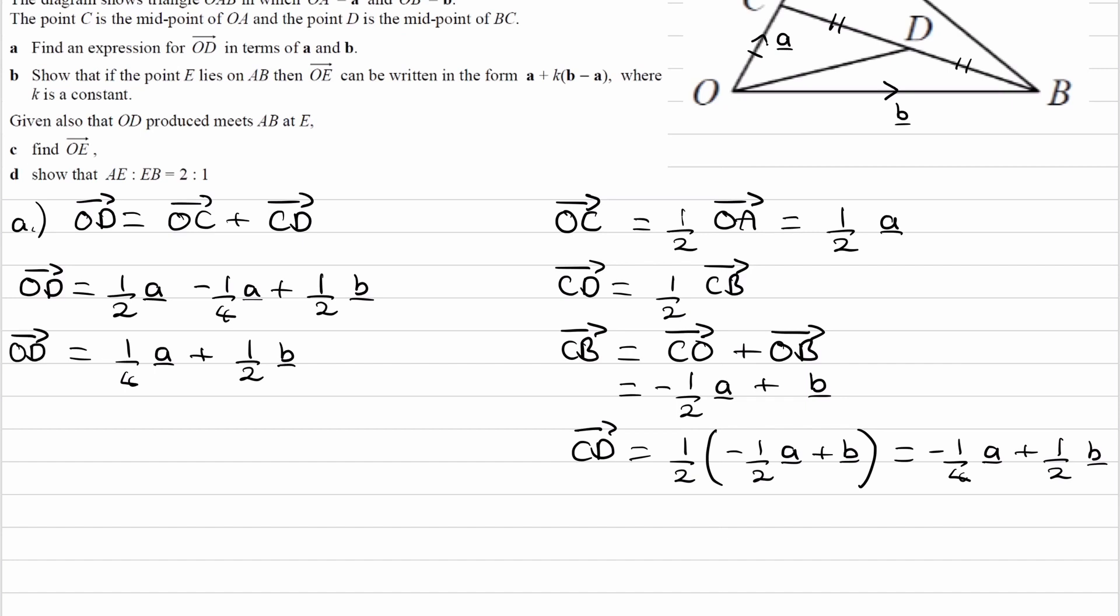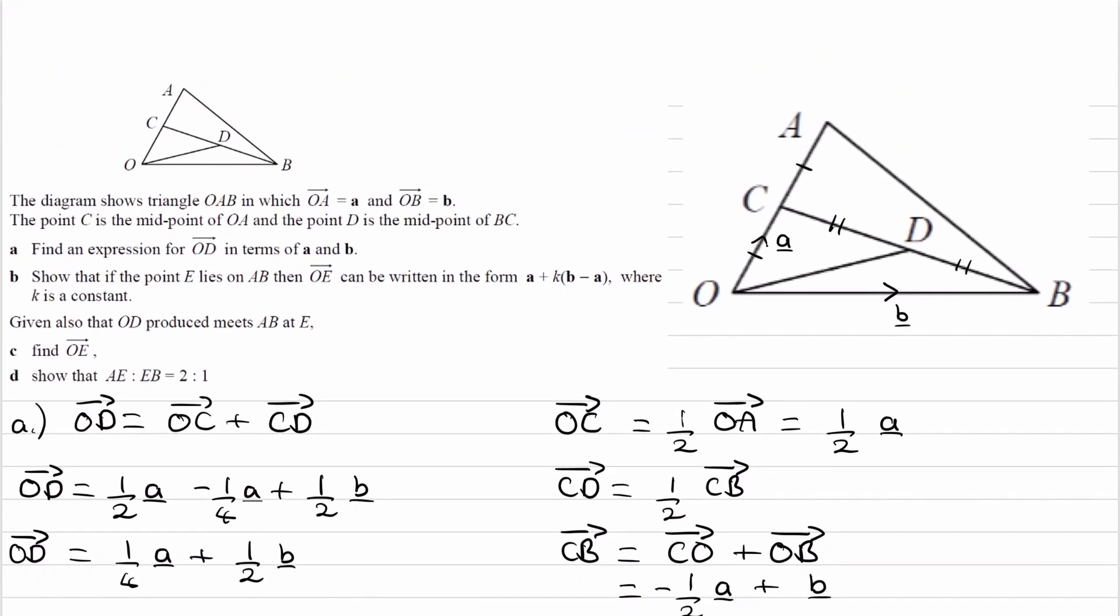For part B, it says show that if point E lies on AB, so point E is on AB somewhere, then OE can be written in this form, where K is also a constant. So E is going to be somewhere on this line. We don't know where it is, it can be anywhere along that line.